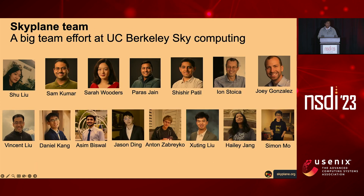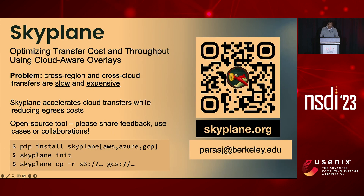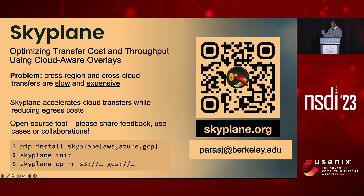I also want to thank the rest of the Skyplane team at Berkeley, which has grown to include many PhD students, postdocs, and undergraduates. To wrap up, Skyplane is a system for high-speed and low-cost data transfer between regions in a single cloud provider or across cloud providers. It's an open source project and we're actively soliciting feedback, use cases, and collaborations. You can get set up in five minutes by running pip install Skyplane. Please feel free to email me with any questions, and I'm happy to answer them now.